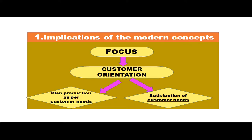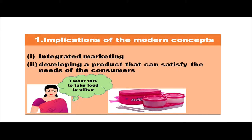Now let us see the implications of the modern concept. In the modern concept, the focus is on customer orientation — that is, planned production as per customer needs and then satisfaction of consumer needs. First, they identify what the customer needs, then they produce the products as per those needs, and through sales promotion techniques, by satisfying the customer needs, the modern concept helps the manufacturers or sellers to get profit. The consumer is the king. First we find out what the consumer needs, and then we develop the product accordingly.